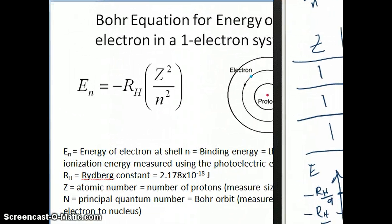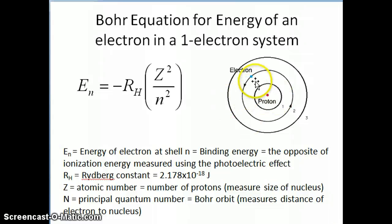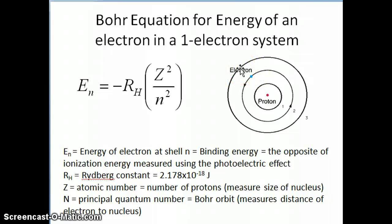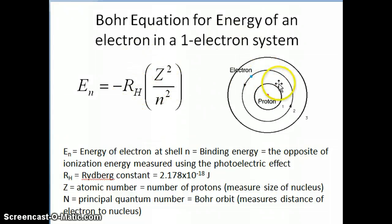That again makes sense, because if you look at the physical picture, when the electron goes from n equals 1 to n equals 2 to n equals 3, it's further and further away from the proton. When we talk about electrostatic interaction, distance is an important factor, so if the distance between the electron and the nucleus is greater, the electron is less stable — it has less attraction to the proton, so it's not as stable as when it's closer.